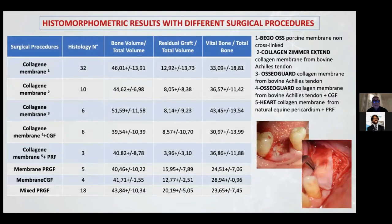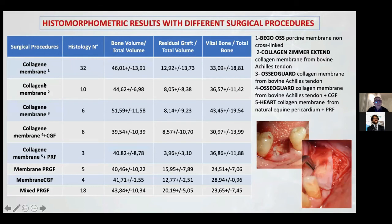This very interesting analysis is in our book. We analyzed the histomorphometrical results between different typologies of surgical procedure. For example, using a normal collagen membrane, the bone volume was 45%, 44% with one collagen membrane and 51% with another membrane.